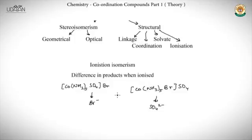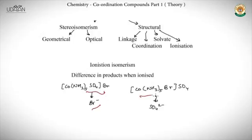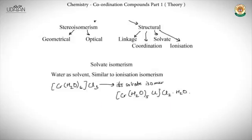Ionization isomerism occurs when different ions are produced upon ionization in a solvent. For instance, one compound releases Br⁻ ions when ionized, while its isomer releases SO4²⁻ ions instead.